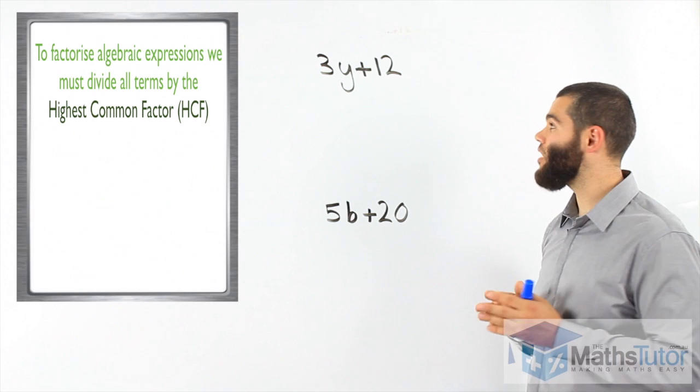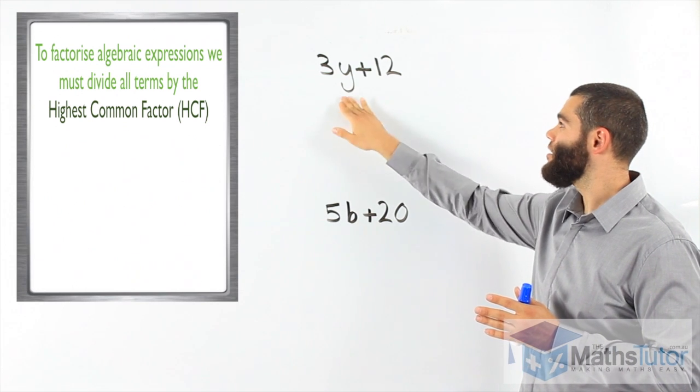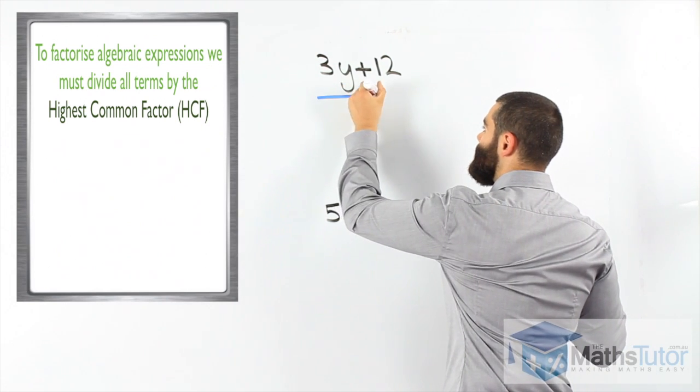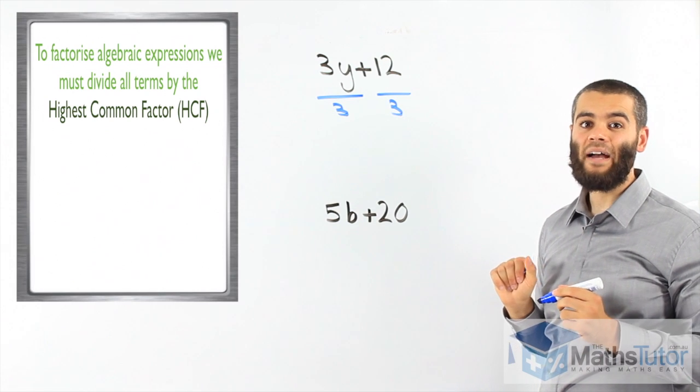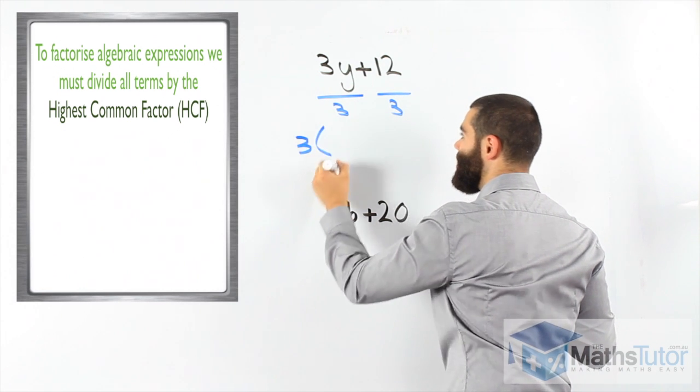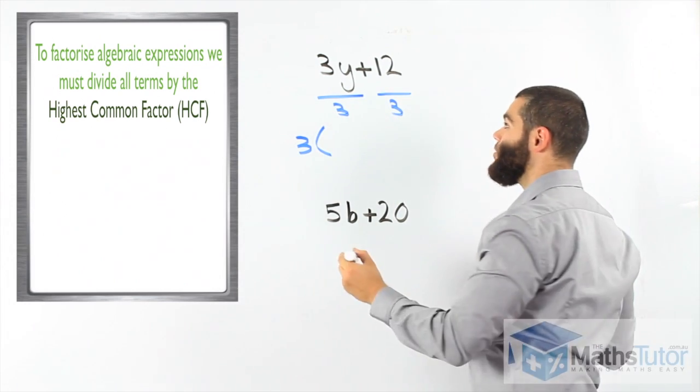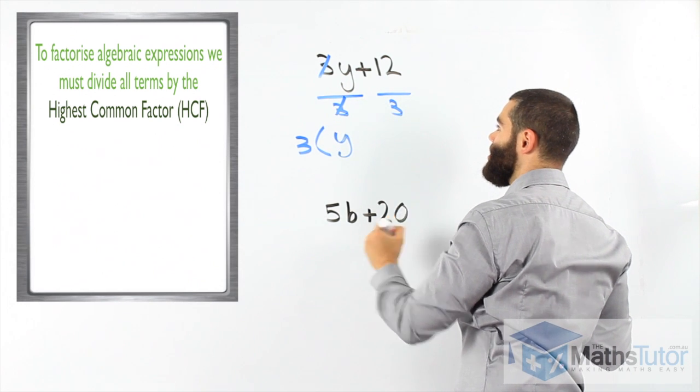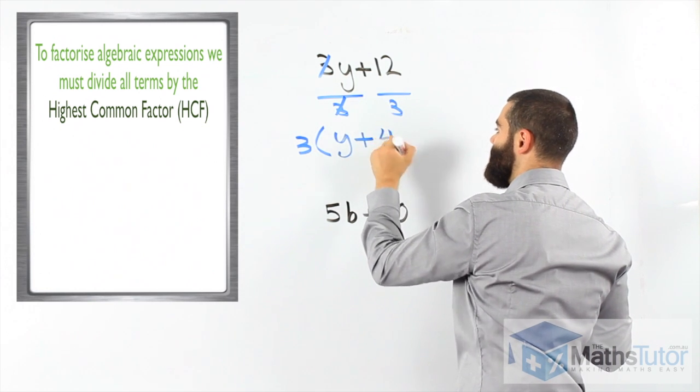will go and will divide into this term and into this term. We know that, looking at this, 3 is the only number that will divide in both of them. It's the highest common factor. So, our answer will be 3, which is our highest common factor, goes outside and the remainder,